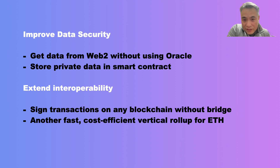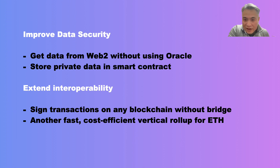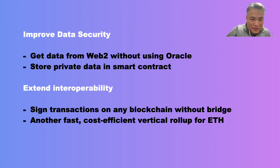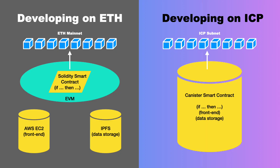I will share four technical breakthroughs in recent months from the developers in the ICP ecosystem. They tackle four important questions for crypto: how to get data from Web2 without using Oracle, how to store private data in smart contracts, how to sign transactions on any blockchain without a bridge, and what about another vertical roll-up solution for Ethereum that's fast and cost efficient. Before we go deeper, let me take one step back to give you some context.